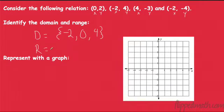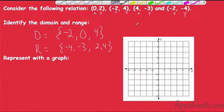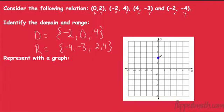Let's take a look at our range. We have negative 4 as the lowest, then negative 3, 2, and 4. So that is our domain and range. We could then plot these as points: 0 comma 2 — that's one point; negative 2 comma 4 — that's another; 4 comma negative 3 — another; and negative 2 comma negative 4 — our fourth point. This is all stuff you've done before, but domain and range are very important things.